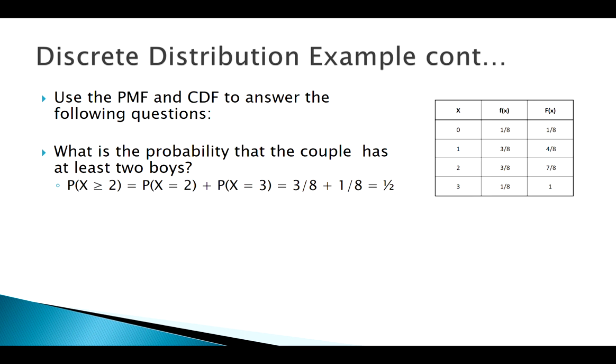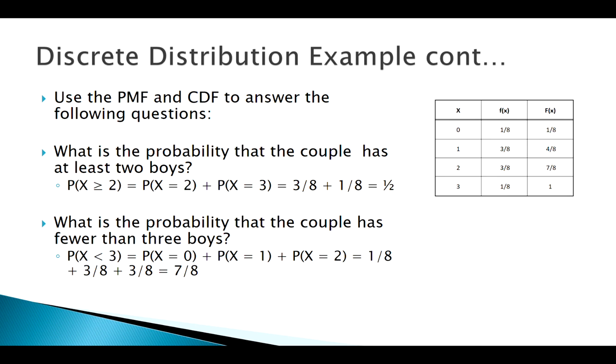I could also do something like this: fewer than three boys. Well fewer than three, that's easy, that's just less than three. But notice it is less than three. That's zero, one, and two, does not include three. If it had said less than or equal to three I could have just gone to my CDF value for three, that would have been easy, but it says less than.